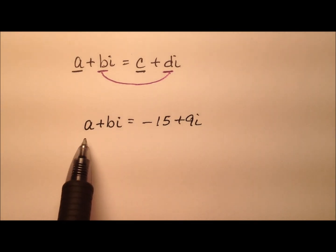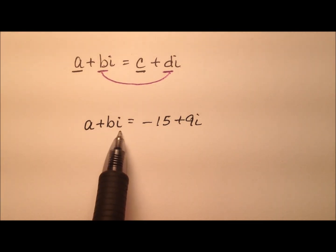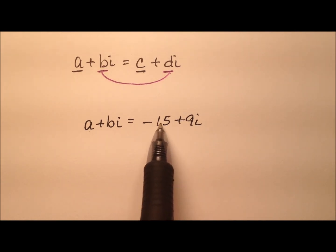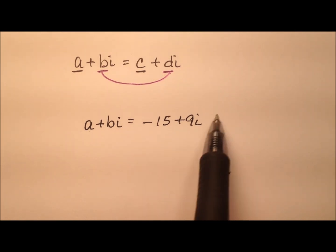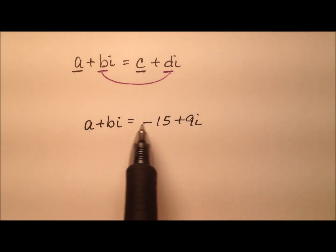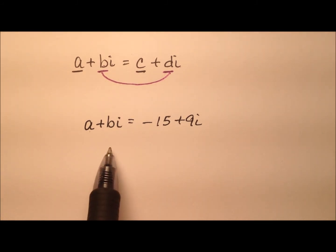Well, I see on the left side I have a complex number in standard form, a plus bi. I'm just not exactly sure what a and b represent. On the right side I have negative 15 plus 9i. Complex number, I know all about that guy.